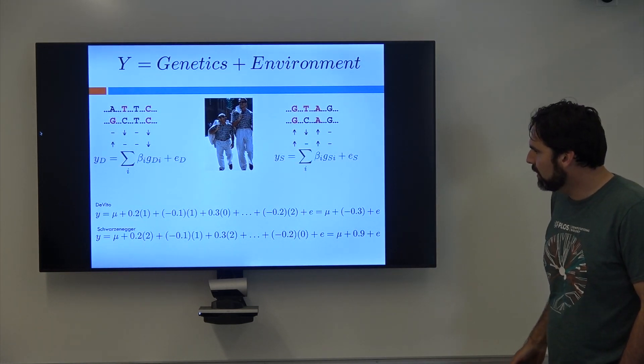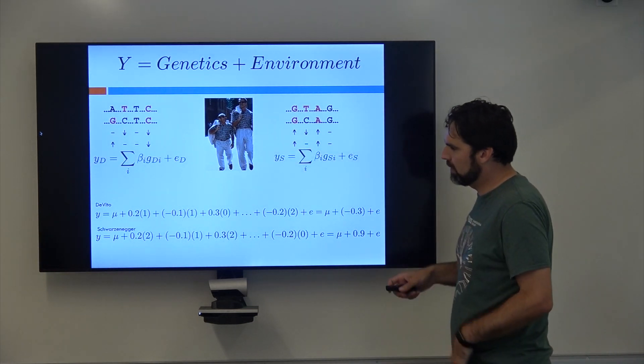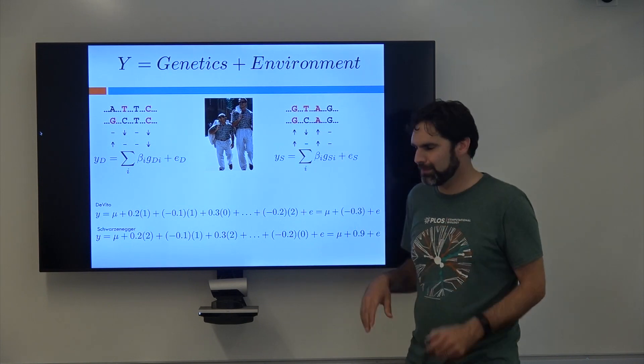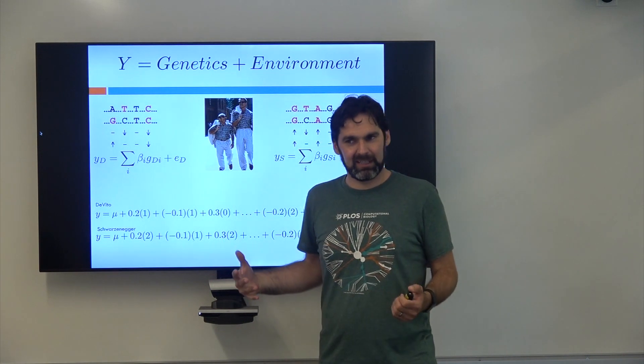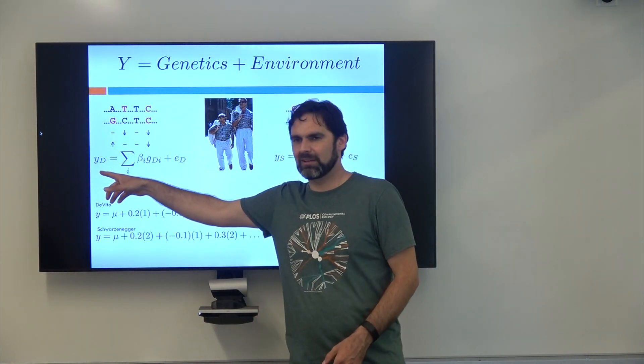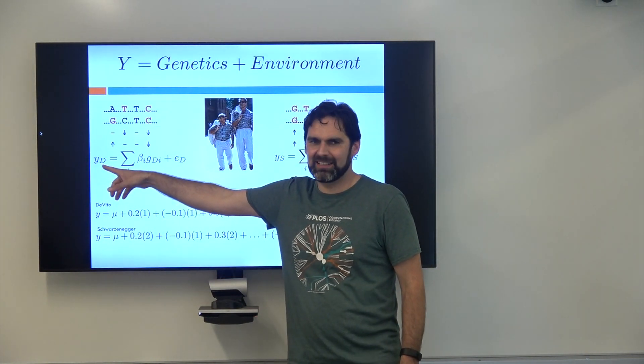So with this model we run into this problem of subscripting. Y isn't a really good variable, it's like the phenotype, but the phenotype of what? So sometimes you want to subscript, but this is the phenotype of Danny DeVito, right?